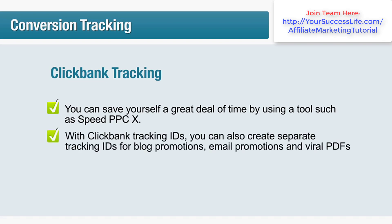With Clickbank tracking IDs you can also create separate tracking IDs for blog promotions, email promotions and viral PDFs, resulting in extremely valuable information to help you optimize your ads and find out where you should focus your efforts for the best return on investment. Clickbank tracking codes are very easy to set up — just enter your code into the provided field when creating your hop link. Be sure to keep a list of each code and what it represents in a spreadsheet, as it's easy to get confused when tracking many things at once.